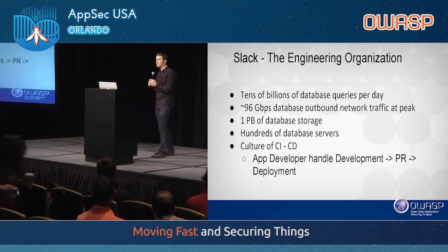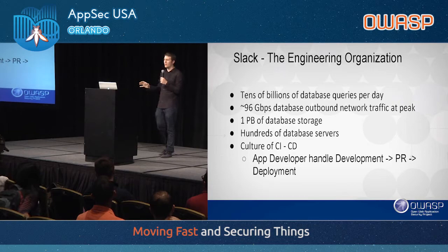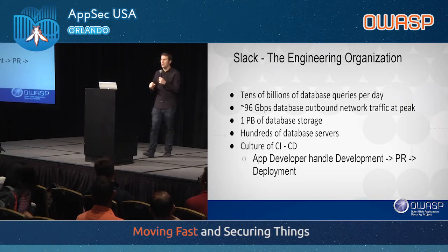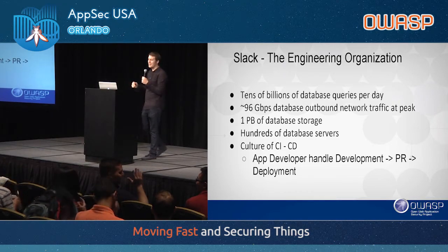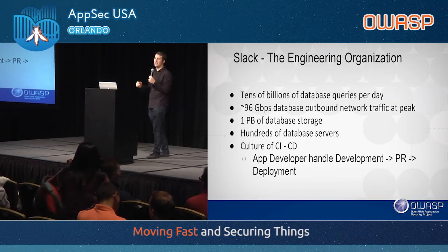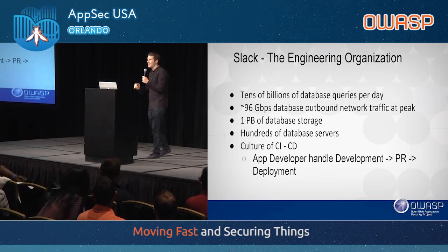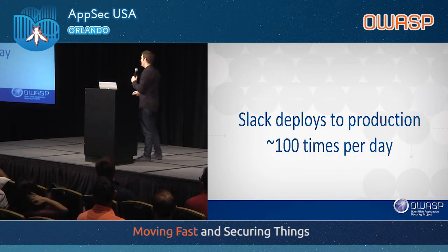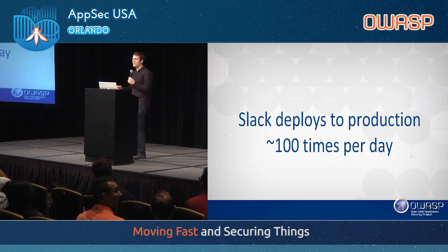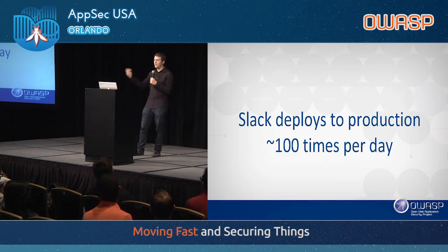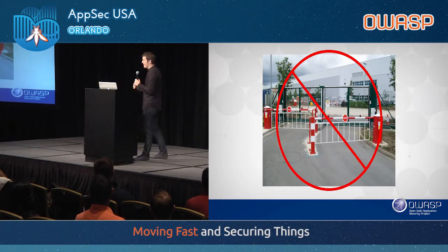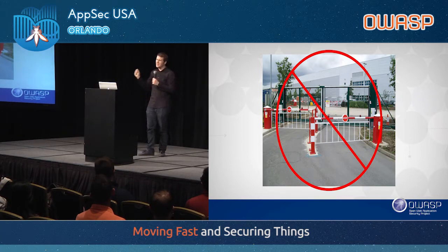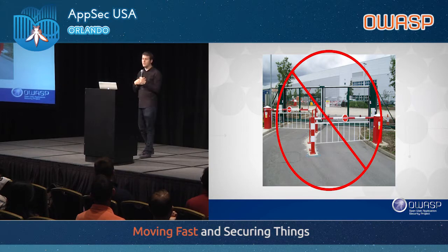I've got a question for the audience. How many of you deploy to production once a month? Once a week? More than once a week — once a day? 10 times a day? 100 times a day? 1,000 times a day? Slack deploys to production approximately 100 times per day. These are individual developers committing their code and deploying, with 100 deployments reaching production each day. And we have a culture of no security gate at deployment — every individual push doesn't require the approval of the security team.